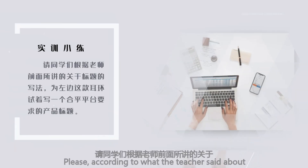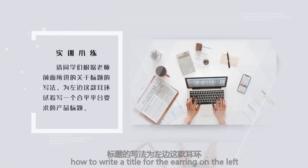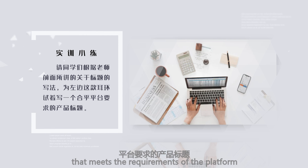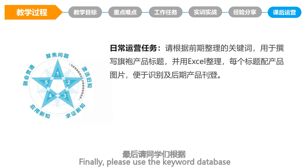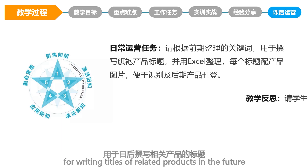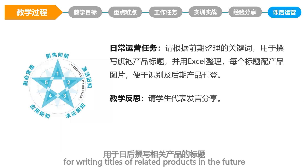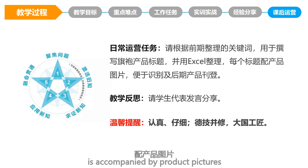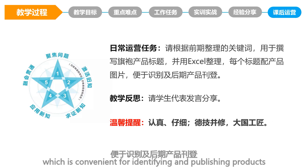According to what the teacher has explained about how to write a title, try to write a product title for the earring shown on the left that meets the requirements of the platform. Please use the keyword database sorted out earlier for writing titles of related products in the future. Each title is accompanied by product pictures, which is convenient for identifying and publishing products.